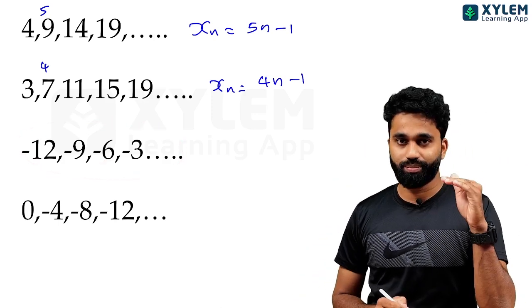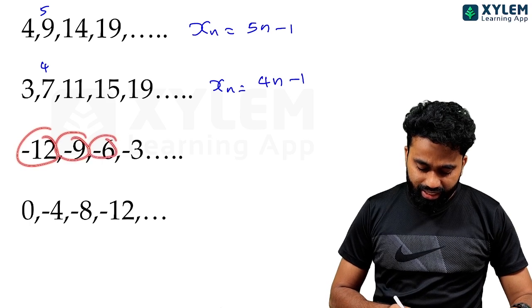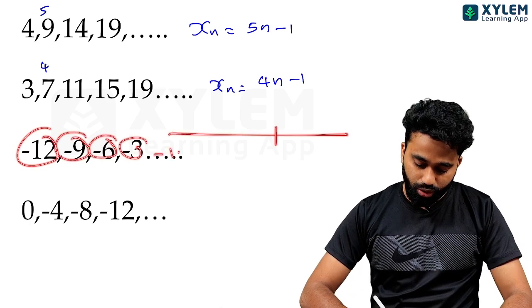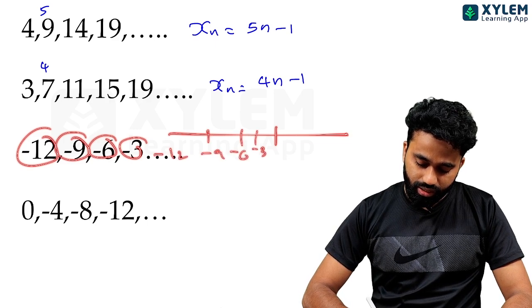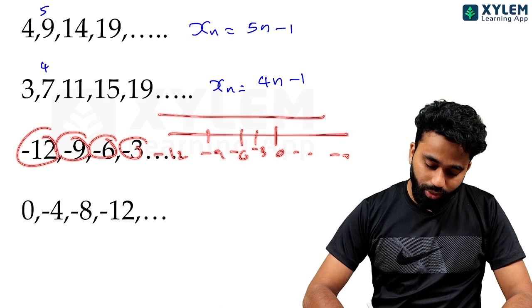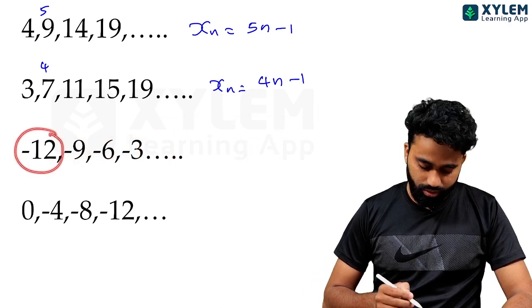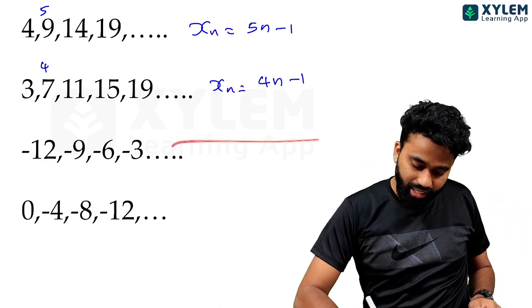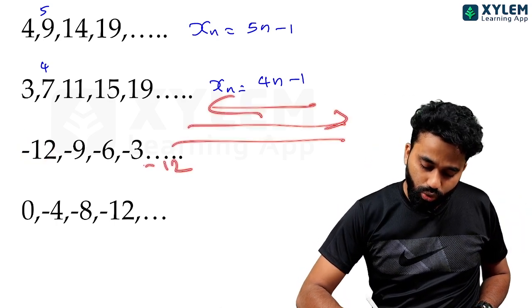The AP is: minus 12, minus 9, minus 6, minus 3. Here, here, minus 12. We are at 3 minus 12. The number is here: minus 12.